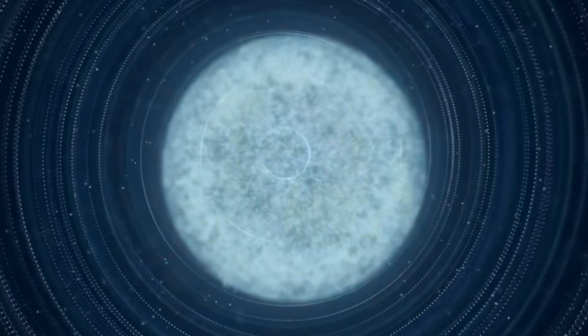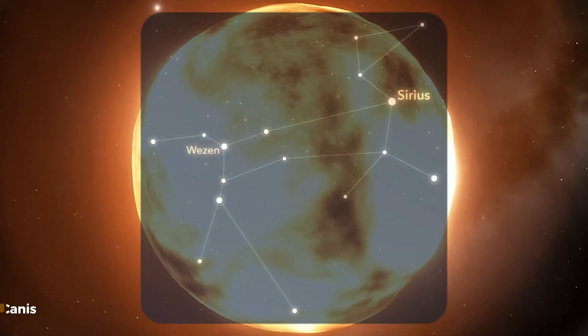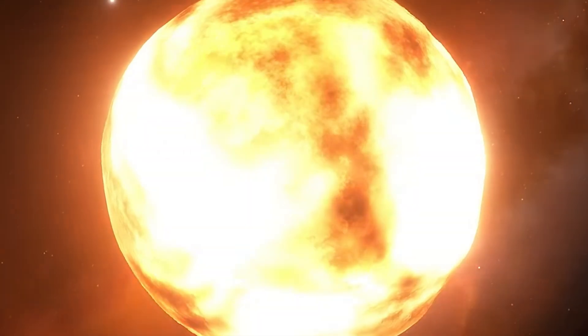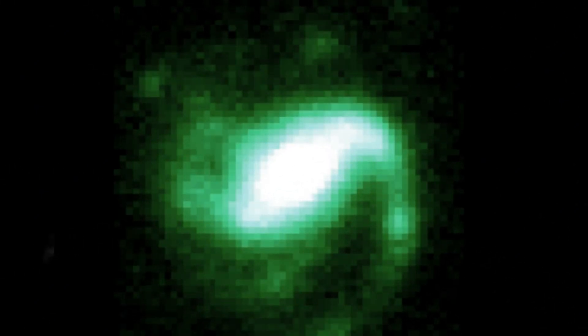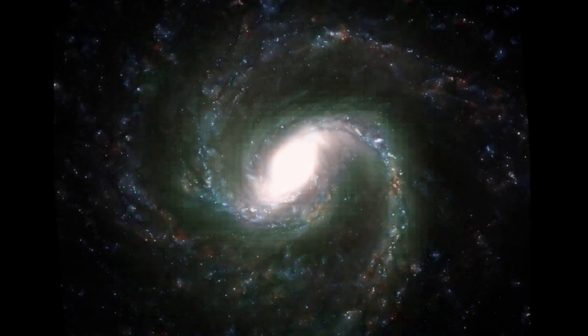Another red supergiant on the list of those going to go supernova is Vy Canis Majoris, located in the constellation Canis Major, 5,000 light-years away from us. Vy Canis Majoris is a binary star system which contains one of the largest stars in our galaxy. It is as large as Jupiter's orbit.